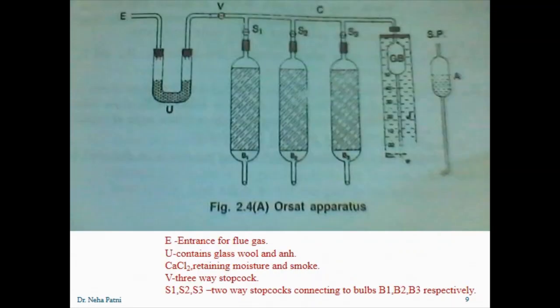Now this is the apparatus. It has a U-tube where fused calcium chloride is present and flue gas is entered inside it. It is connected with three containers which have three different solutions. It is joined to a graduated burette, kept in a water jacket, and then connected via rubber tubing to a water container.